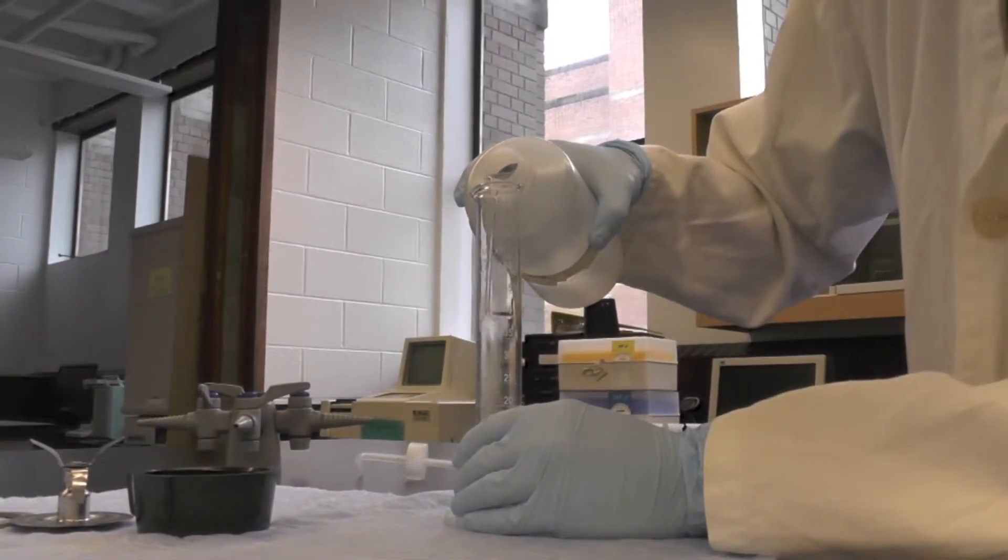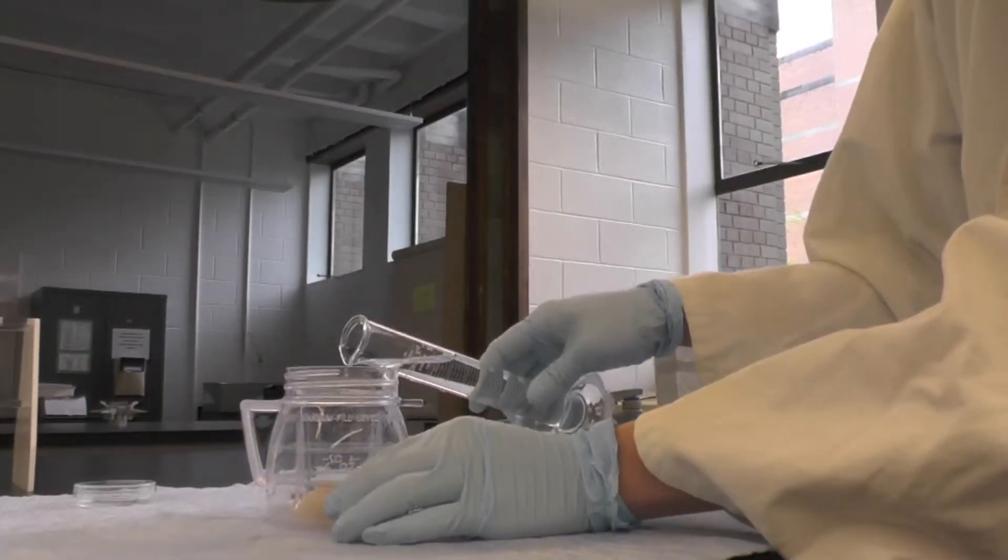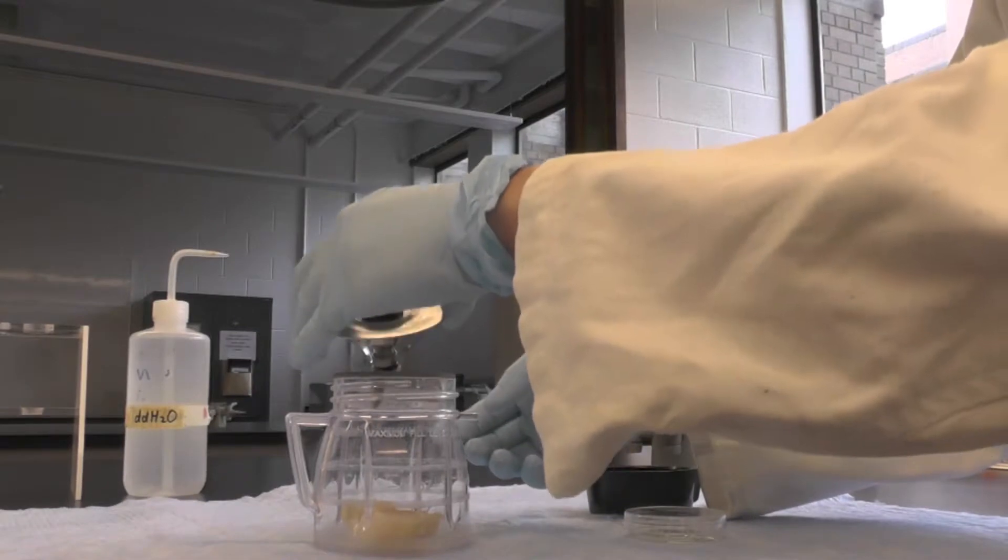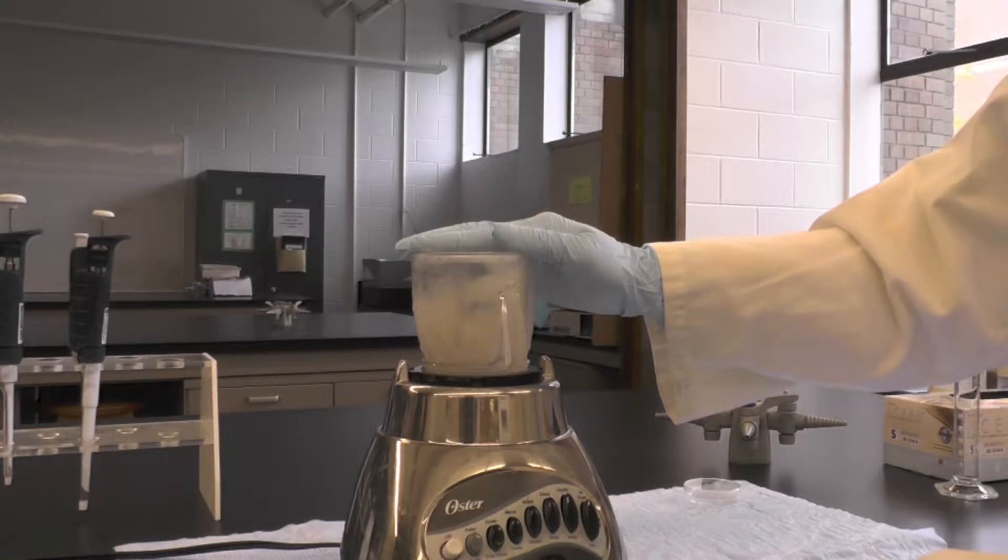Then, using a graduated cylinder, add 50 mL of DD water. Homogenize the sample for about 1 minute until it's well blended.